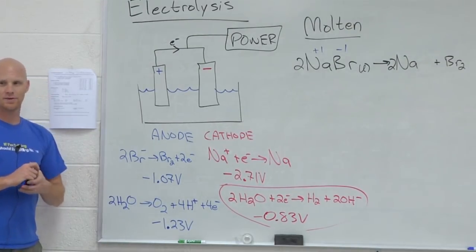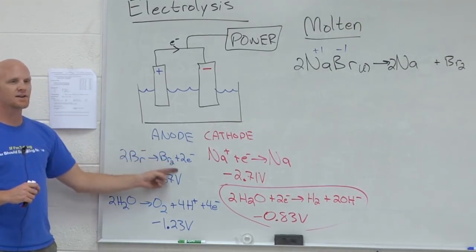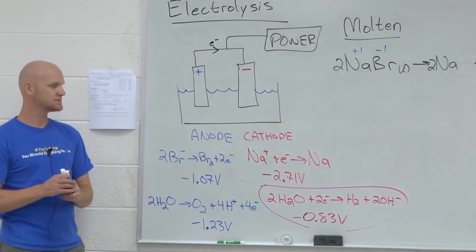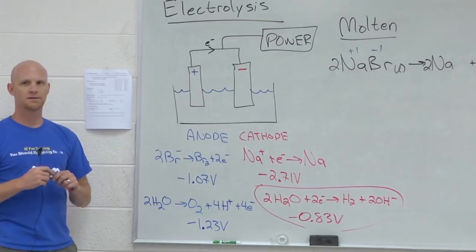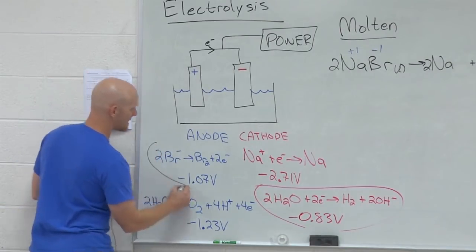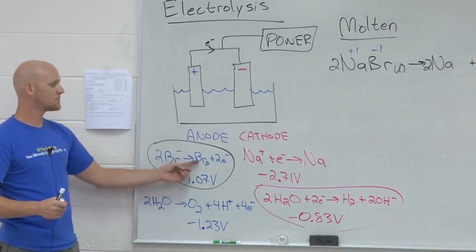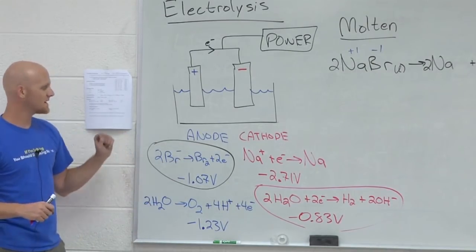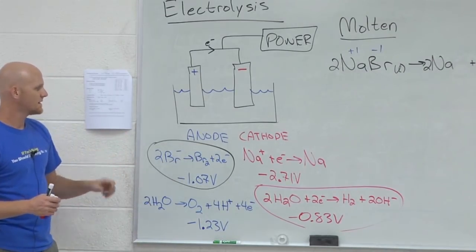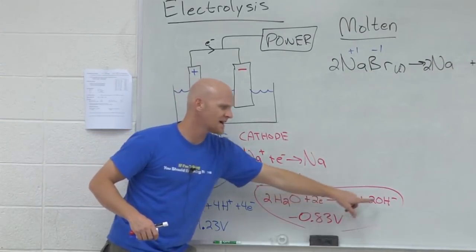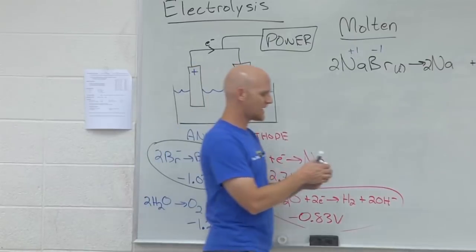Now the anode. The anion can get oxidized, or water can get oxidized. Which one is easier? Yeah, in this case the anion, bromine, is easier, or the bromide ion is easier to oxidize, and so you'll produce bromine. And so in this case, in aqueous electrolysis, bromine gets produced at the anode, but hydrogen gas and hydroxide gets produced at the cathode.